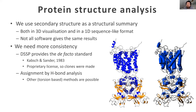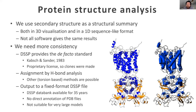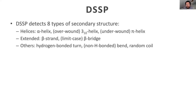DSSP assigns secondary structure by hydrogen bond analysis, though of course there are other ways to look at secondary structure, such as different torsion angles. DSSP writes its output as a fixed-format DSSP file, and those have been available in the DSSP databank for more than 35 years. But it didn't directly annotate PDB files, and because it's a fixed-format system, it's not suitable for very large structure models like we now get from electron microscopy. DSSP detects eight types of secondary structure: helices including the alpha helix, the underwound 3-10 helix, the overwound pi helix; extended structures like beta strands and beta bridges; different types of turns; and anything it cannot assign goes to random coil — the junk category.